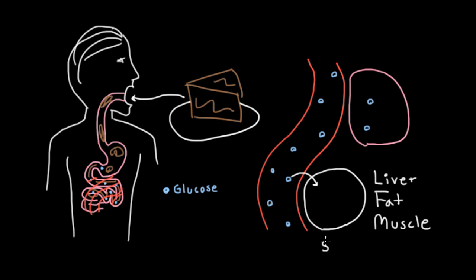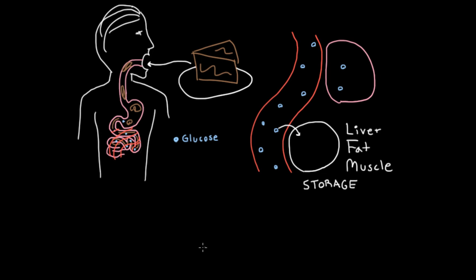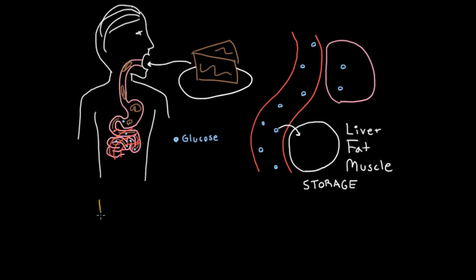So to repeat, these are cells where you're going to store glucose. So let's write storage. So let's keep track of what we're saying here. We're giving reasons why you want to store your glucose. And the first reason we've said is so that you can use it over a longer period of time.